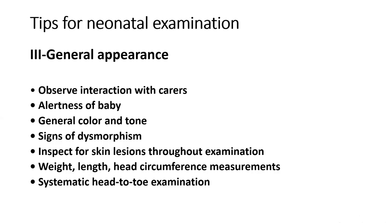General examination begins by observing the baby's interaction with the caregiver, alertness, color — whether centrally cyanosed, peripherally cyanosed, or pink all over — tone, and cry. We look for dysmorphic features, inspect the skin all over, confirm weight, length, and OFC, then proceed to systematic head-to-toe examination.